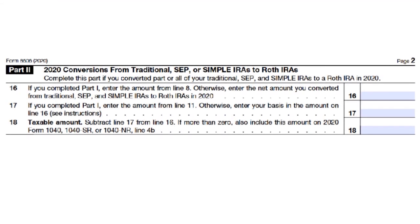Now let's move on to Part 2: conversions from traditional SEP and SIMPLE IRAs to Roth IRAs. For Line 16: if you didn't complete Line 8, see the instructions for that line, then enter on Line 16 the amount you would have entered on Line 8 had you completed it. For Line 17: if you did not complete Line 11, enter on Line 17 the amount from Line 2, or the amount you would have entered on Line 2 if you had completed that line, plus any contribution included on Line 1 that you made before the conversion.